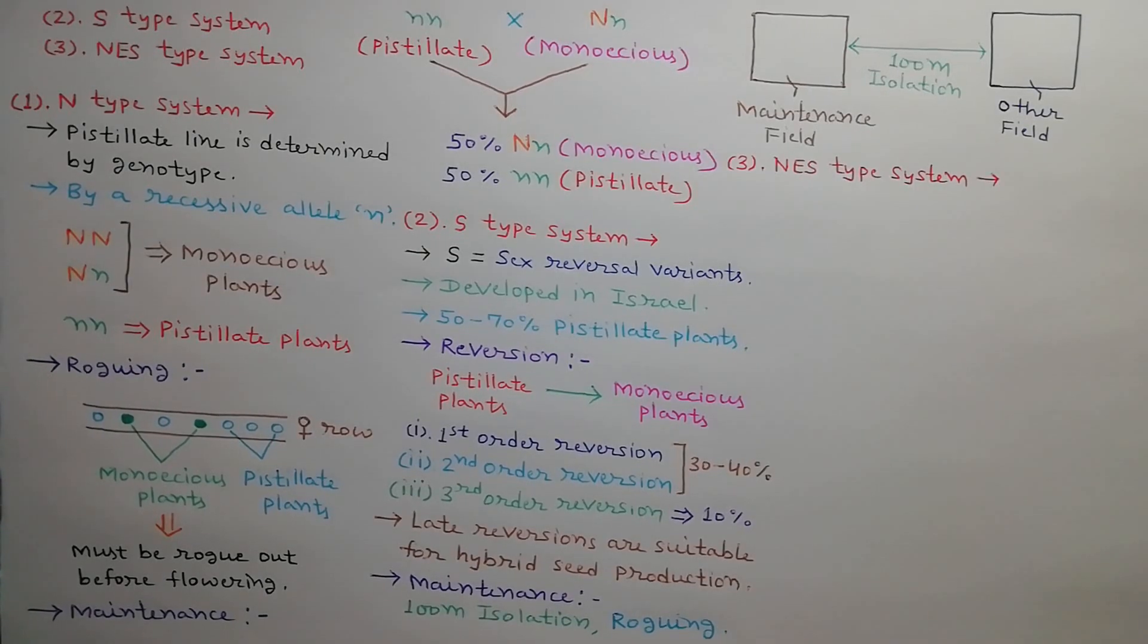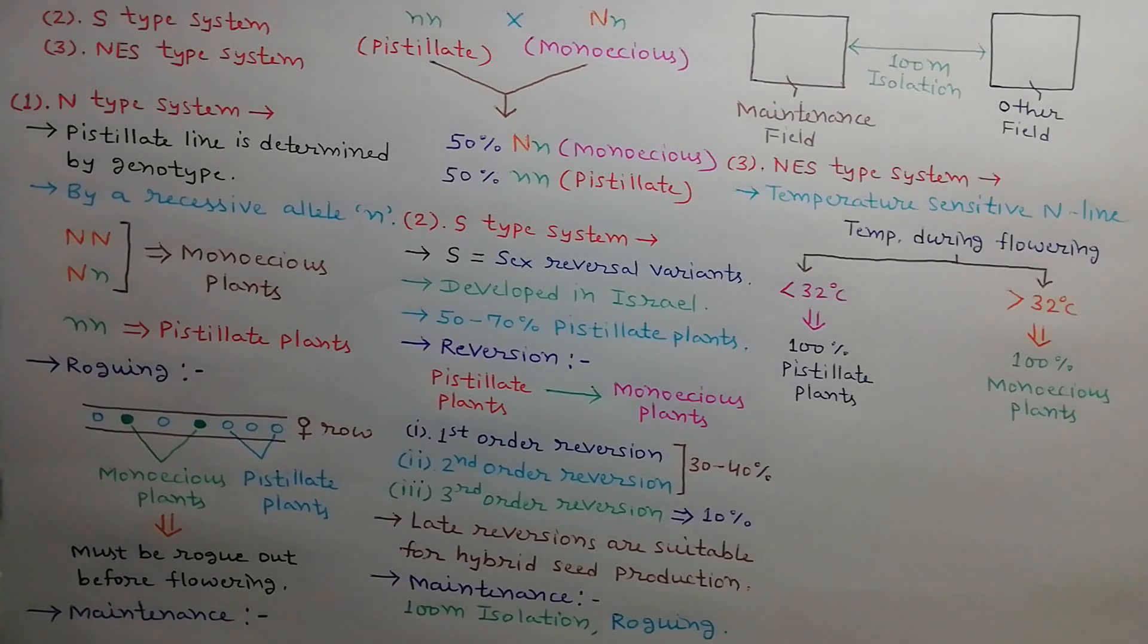Third is NES type system. It is a temperature sensitive N line. Temperature conditions during the time of flowering determine the pistillate plants. Less than 32 degree centigrade temperature during flowering favors 100% pistillate plants, whereas greater than 32 degree centigrade temperature during flowering favors 100% monoecious plants.